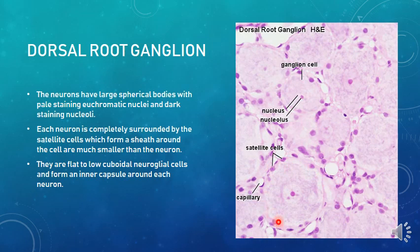The fibroblasts and collagen fibers form the outer capsule surrounding the satellite cell inner capsule. The main purpose of these satellite cells is to prevent unwanted depolarization of sensory neurons. So that is about the dorsal root ganglion: large spherical neurons, pale staining euchromatic nucleus with prominent nucleolus, and each neuron completely surrounded by many satellite cells.